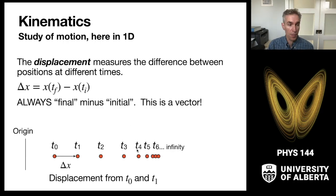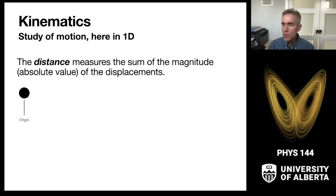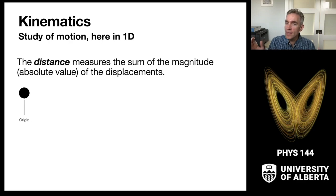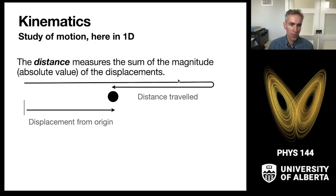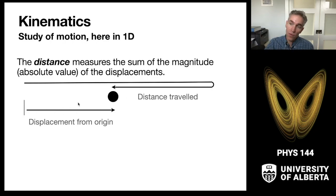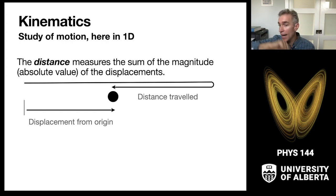We also sometimes talk about distance. The distance represents the sum of the magnitudes of a bunch of small displacements — essentially the total distance the particle travels. If a particle swings out to the right and comes back, the full path trajectory is the distance traveled, while the displacement is measured from zero to wherever the particle is now. The displacement can grow and shrink, but the distance is always increasing or staying the same.